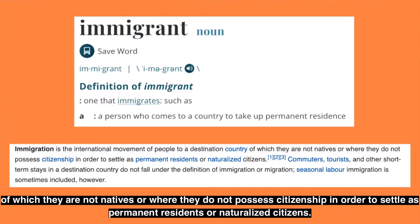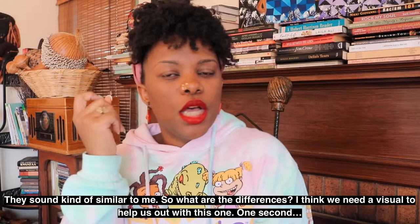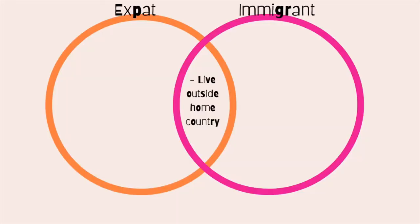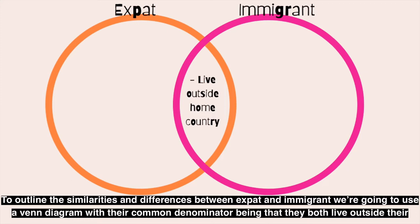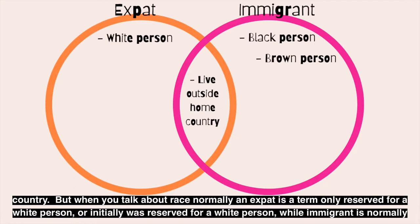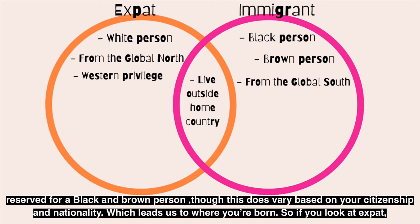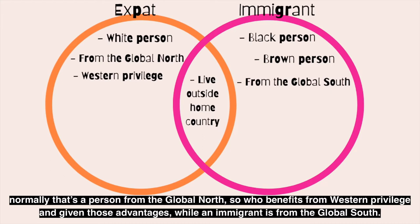They sound kind of similar, so what are the differences? To outline the similarities and differences between expat and immigrant, we're going to use a Venn diagram with their common denominator being that they both live outside their home country. When you talk about race, normally expat is a term reserved for a white person, while immigrant is normally reserved for a Black or brown person, though this varies based on citizenship and nationality. In terms of where you're born, an expat is normally a person from the Global North who benefits from western privilege, while an immigrant is from the Global South.